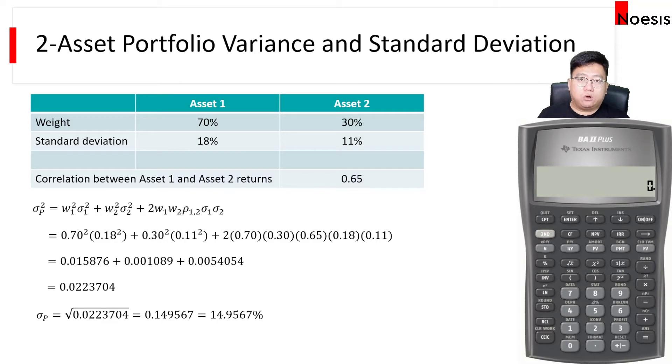So I'm applying the store and recall function to this calculation on the two-asset portfolio variance and standard deviation. I have here all the assumptions on the weights and the standard deviation and the correlation between the returns of asset 1 and 2. The weights and standard deviations of the returns are in percentage.